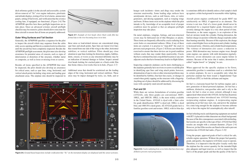Fuel and Oil. While there are various formulations of aviation gasoline (avgas), only three grades are conventional: 80/87, 100LL, and 100-130. 100LL is the most widely available in the United States. Avgas is dyed with a faint color for grade identification: 80/87 is dyed red, 100LL is dyed blue, and 100-130 is dyed green. All avgas grades have a familiar gasoline scent and texture. 100LL with its blue dye is sometimes difficult to identify unless a fuel sample is held up against a white background in reasonable white lighting. Aircraft piston engines certificated for grade 80/87 run satisfactorily on 100LL if approved as an alternate. Fuel of a lower grade should never be substituted for a required higher grade.